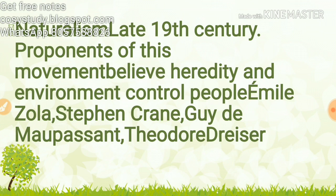Naturalism: a late 19th century movement whose proponents believed heredity and environment control people. Key writers include Émile Zola, Stephen Crane, Guy de Maupassant, and Theodore Dreiser.